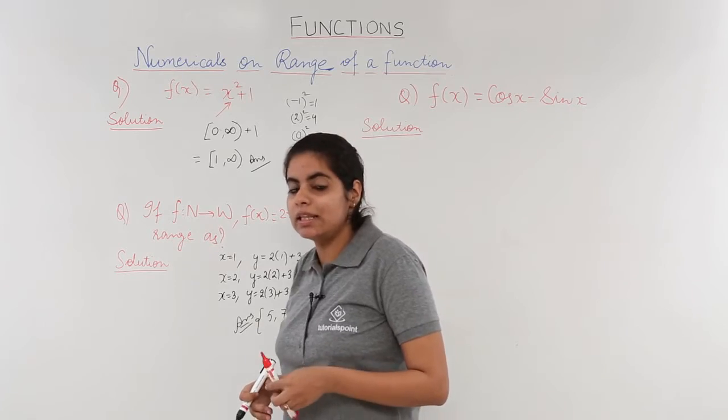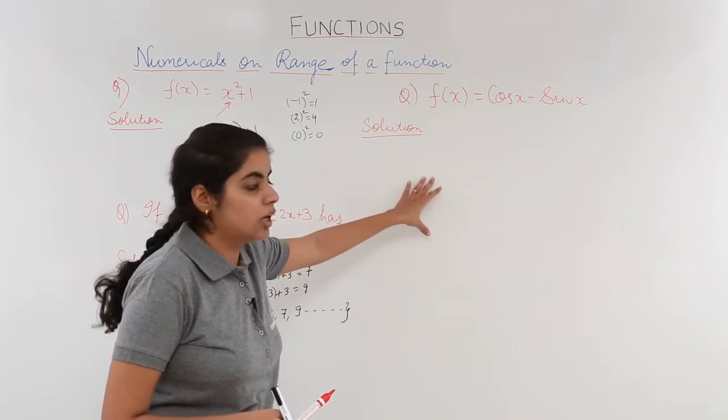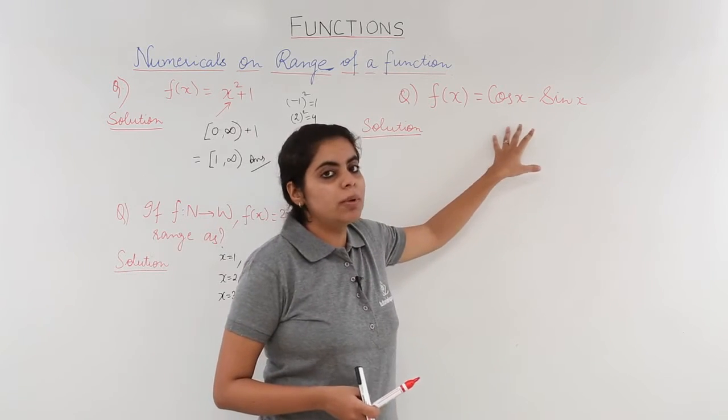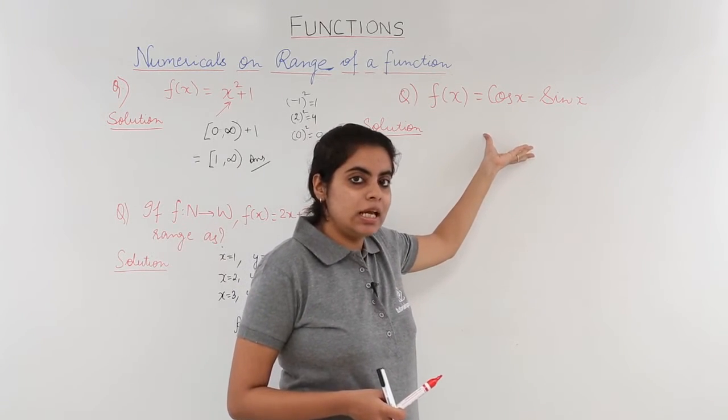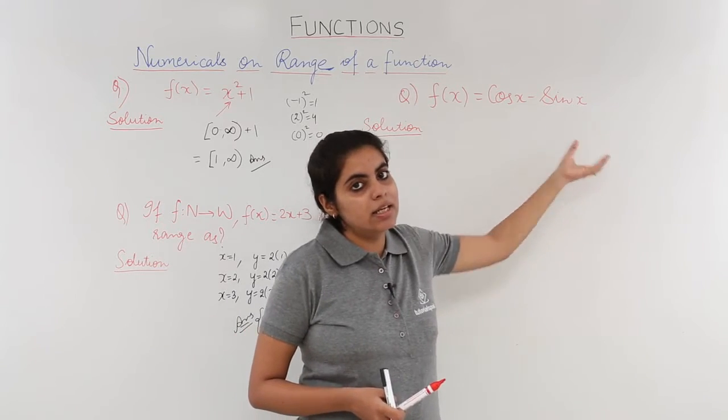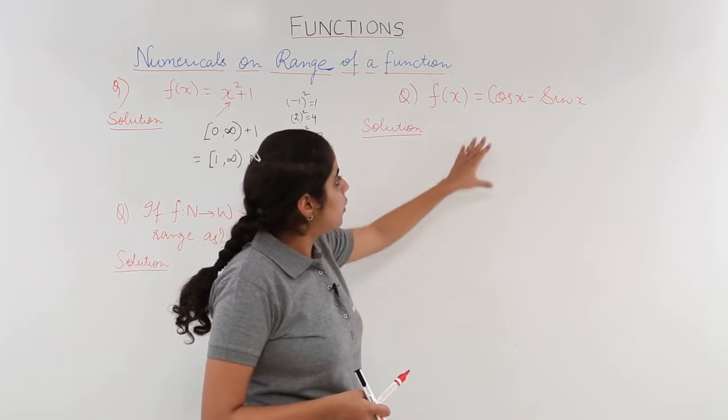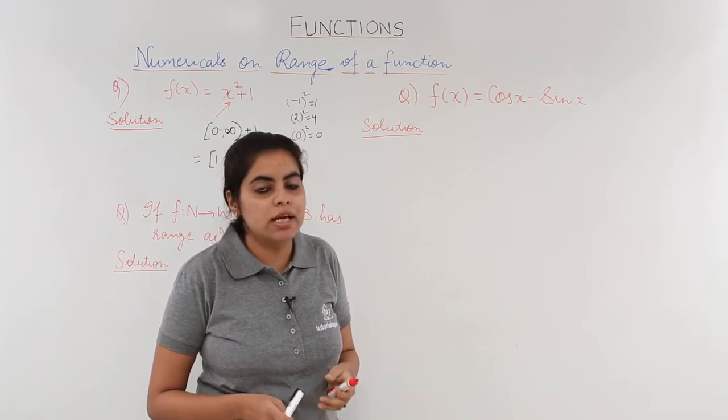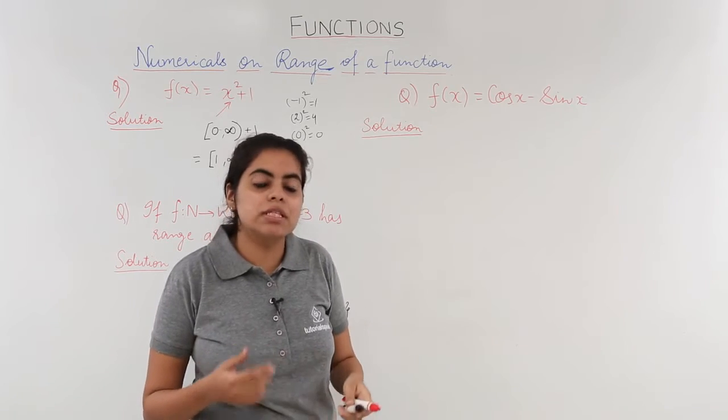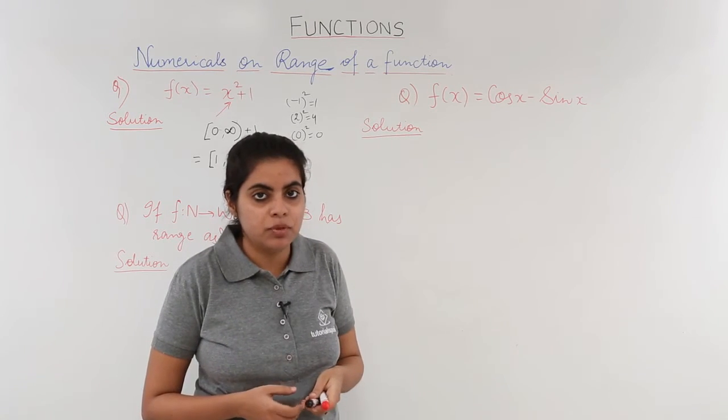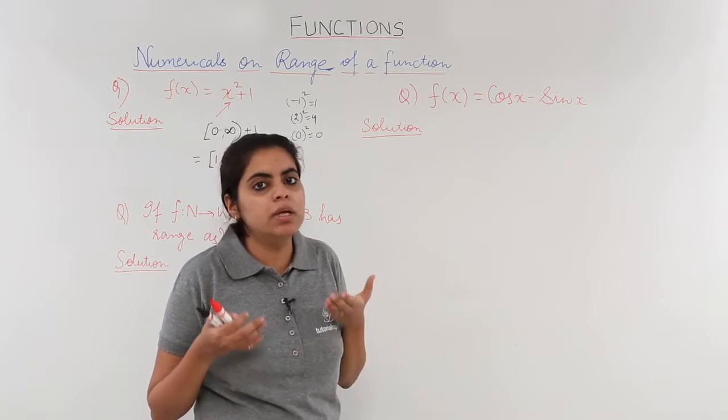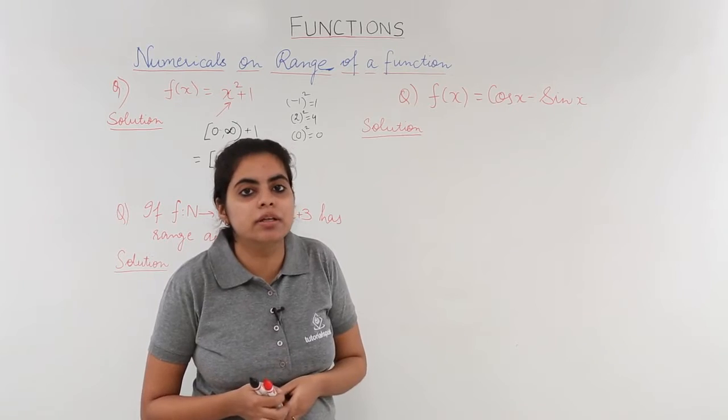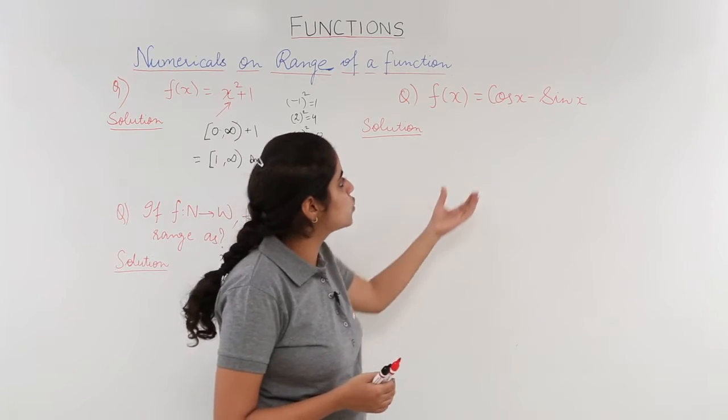Let's see the third and the last problem for understanding range. This problem has trigonometric functions involved in it, which are cosine x, that is cos x, and sine x, which is sin x. For understanding purpose, we already know that these functions, as we talked in the domain questions also, have some restrictions on them. For domain, sin x and cos x can be engaged with any of the real values. But for range they are limited.